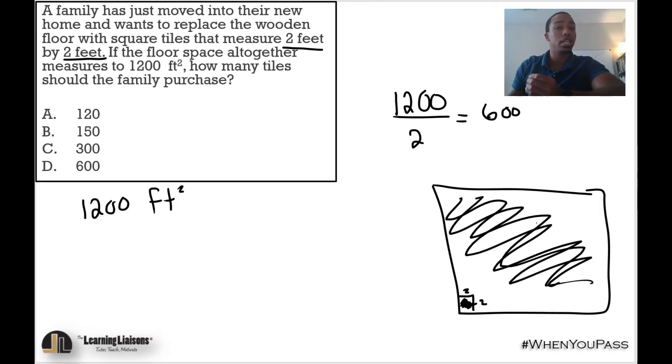What's the area of each tile? Well, two feet by two feet. If that's square, two times two—that's the area of a square, side times side—and that's going to give us four square feet. That's the area of each individual tile.